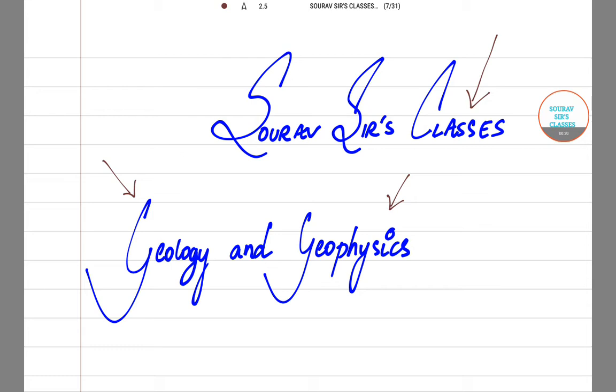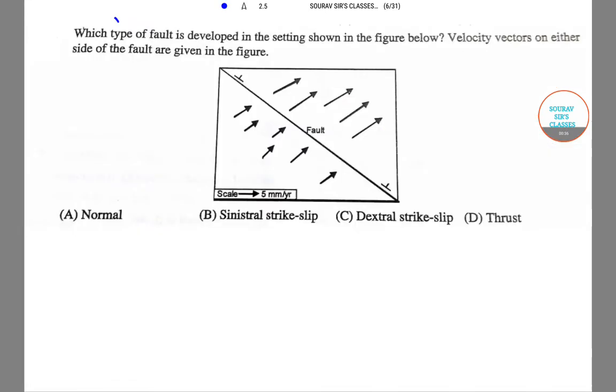Let's get started with the first question. The question says: which type of fault is developed in the setting shown in the figure below? Velocity vectors on either side of the fault are given in the figure. There are four options and we need to choose the most appropriate one.